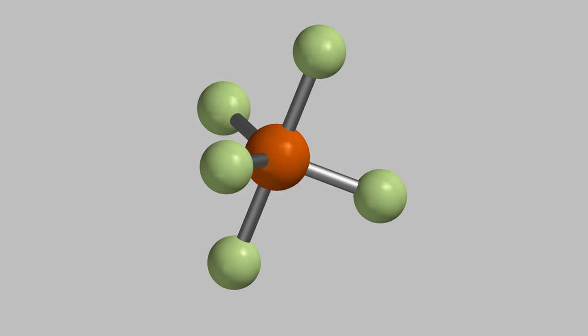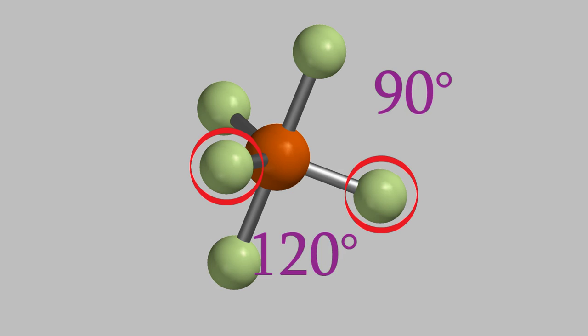This shape is also different from the others that we've seen so far, because there are actually two different angles between the bonds. The angle between the axial bonds and the equatorial ones is 90 degrees, but the angle between each of the equatorial bonds is 120 degrees.